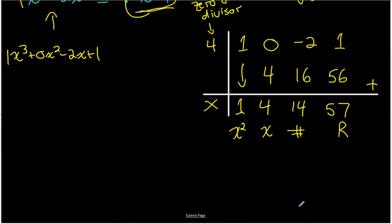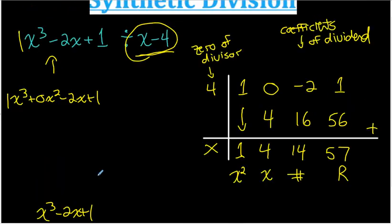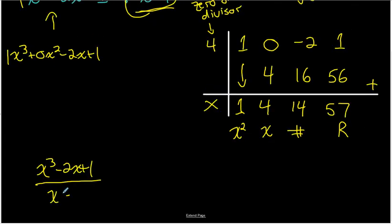And then there is a remainder of 57. So I can write my final answer either in quotient form. So quotient form would be x cubed minus 2x plus 1 over the divisor of x minus 4 equals the quotient, which is 1x squared plus 4x plus 14 plus the remainder over the divisor of x minus 4. That's quotient form.